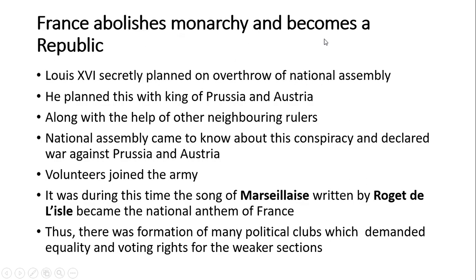France abolishes monarchy and becomes a republic — a republic being a system where there is no hereditary monarch but an elected ruler. Louis XVI secretly planned to overthrow the National Assembly, conspiring with the King of Prussia and Austria along with other neighboring rulers.